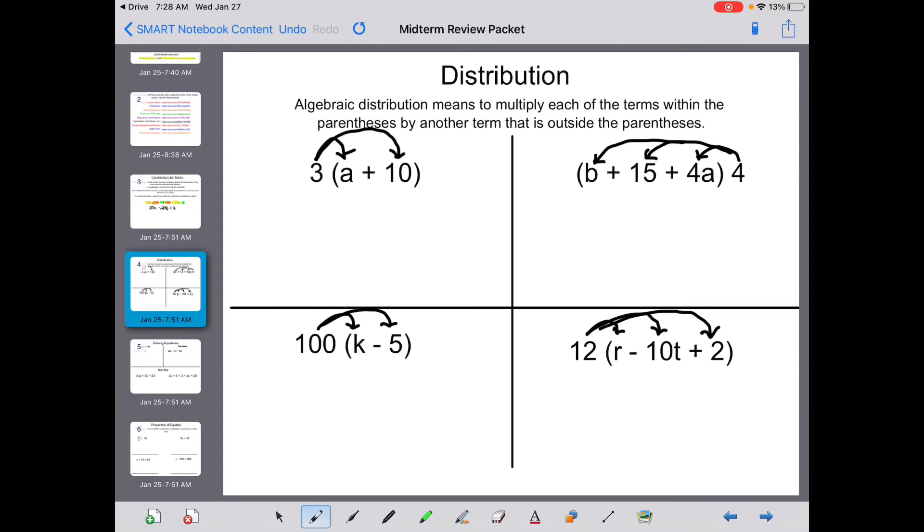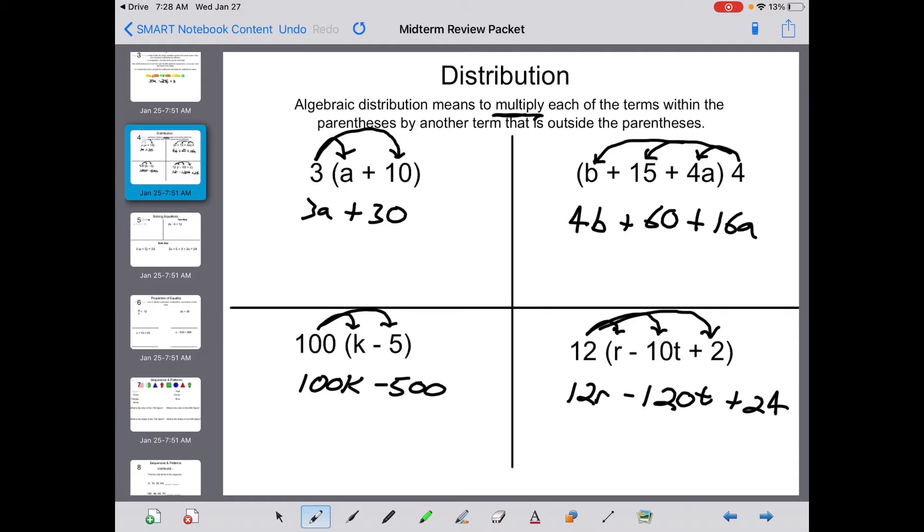Distribution is fairly simple because we said it's multiply. 3 times a is 3a. 3 times 10 is 30. 4 times b is 4b. 4 times 15 is 60. And 4 times 4a is 16a. 100 times k is 100k. 100 times negative 5 is negative 500. 12 times r is 12r. 12 times negative 10t is negative 120t. 12 times 2 is 24. Again, you're going to see distribution in the multiple choice section of your midterm.